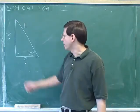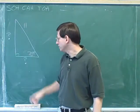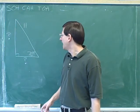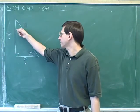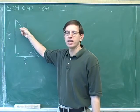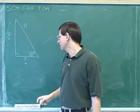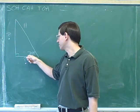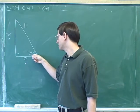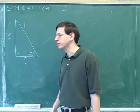Here's our next problem. We have another right triangle, and the length of this side is 11, and the size of this angle is 70 degrees. This is a 70 degree angle.